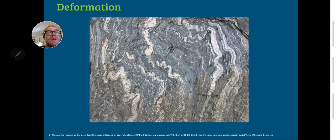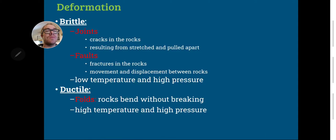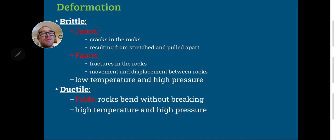What kind of deformation do you think we have here? This is an example of ductile deformation. Some other examples of deformation in rocks are joints — those cracks result from being stretched or pulled apart. Faults, where you have movement or displacement between the rocks, can be created by brittle deformation. Ductile deformation is seen in bends or folds, and they usually require higher temperatures and pressures to form than brittle deformations.